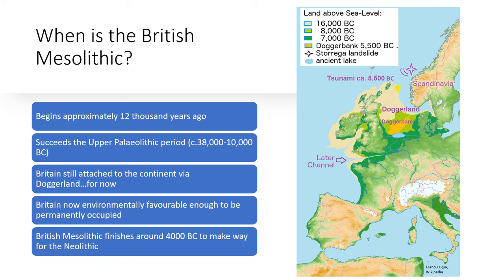Despite this, at the beginning of the Mesolithic period, Britain was still attached to continental Europe via Doggerland — or as it's known now, submerged underwater, the Dogger Bank. Britain would remain attached to the continent until around 6500 BC.